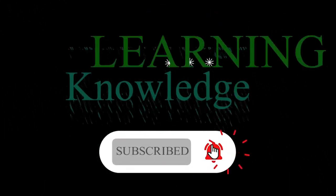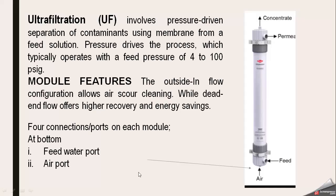Ultrafiltration, known as UF, involves basically pressure-driven suppression of contaminants using a membrane from a feed solution or from impurities. Pressure drives the process, which typically operates with a feed pressure of around 4 to 100 psig.